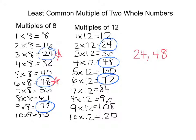Now we're going to talk about finding the least common multiple of two whole numbers. So let's go back to the example from the previous video. In the previous video, we found the first two common multiples between 8 and 12.